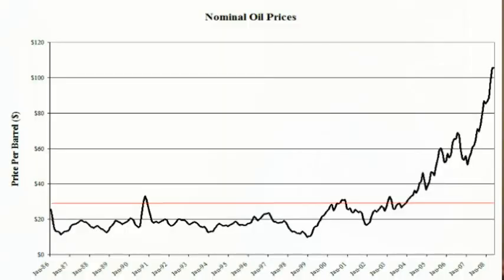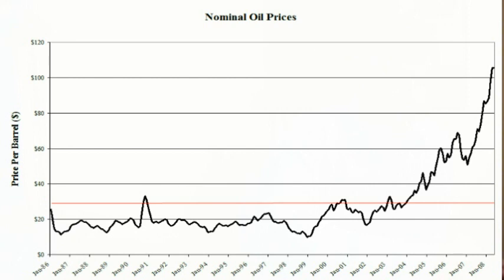The first chart shows us nominal oil prices — prices without adjustments for inflation. Starting in the mid-80s, oil prices held pretty firm at around $20 until the late 90s, where they dipped. Then after the September 11th attacks, they began a slow progression upward, and that progression rapidly increased in late 2006, 2007, and as we're seeing still in 2008.